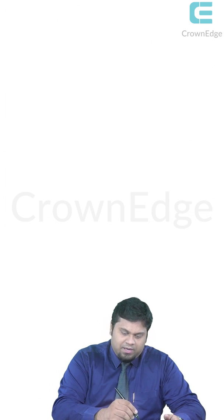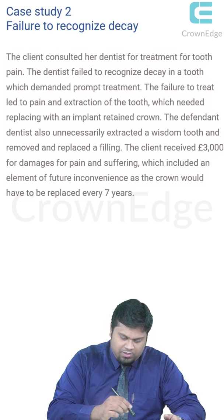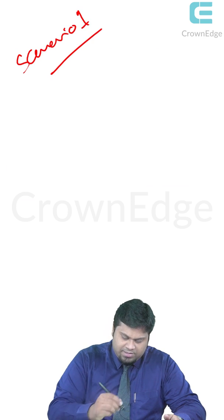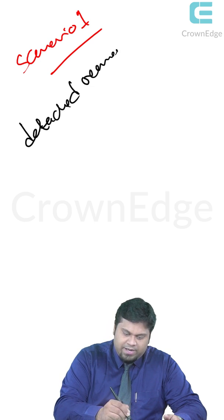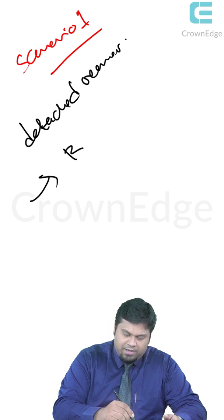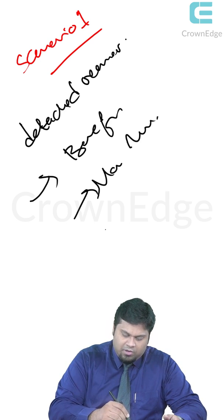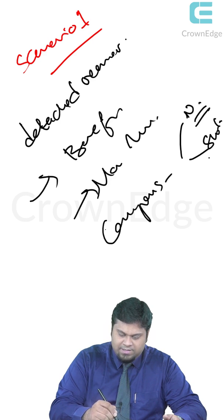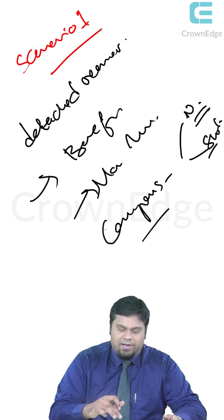When given a case study question, look at the scenario carefully. In scenario one — the detached reamer — the principles which are violated are beneficence and non-maleficence. The compensation is given because the patient suffered a nervous breakdown along with shock and anxiety. This is how any kind of medical negligence case is decided.